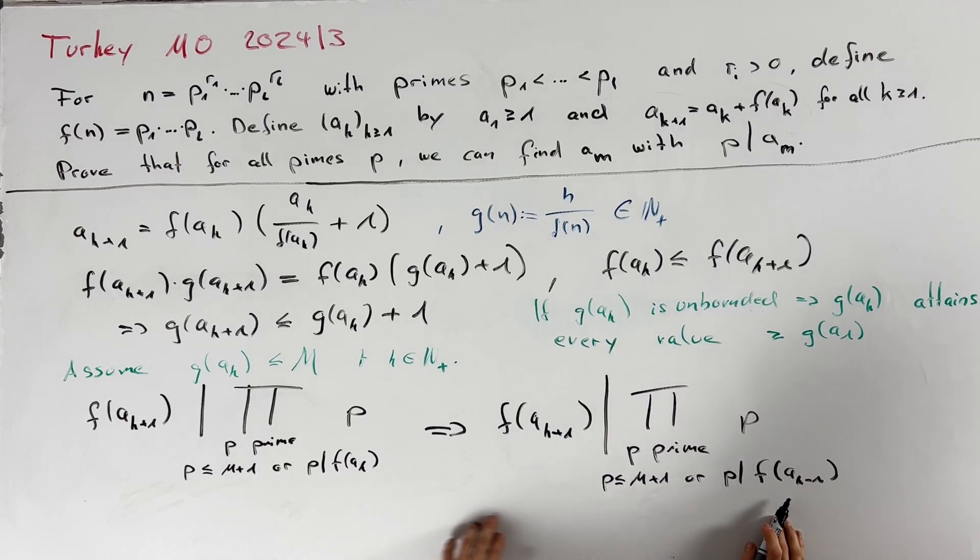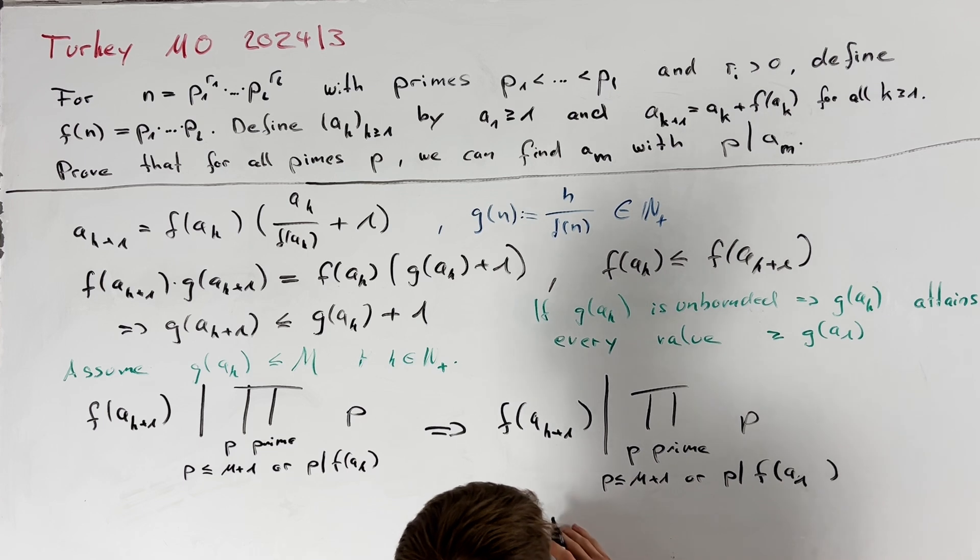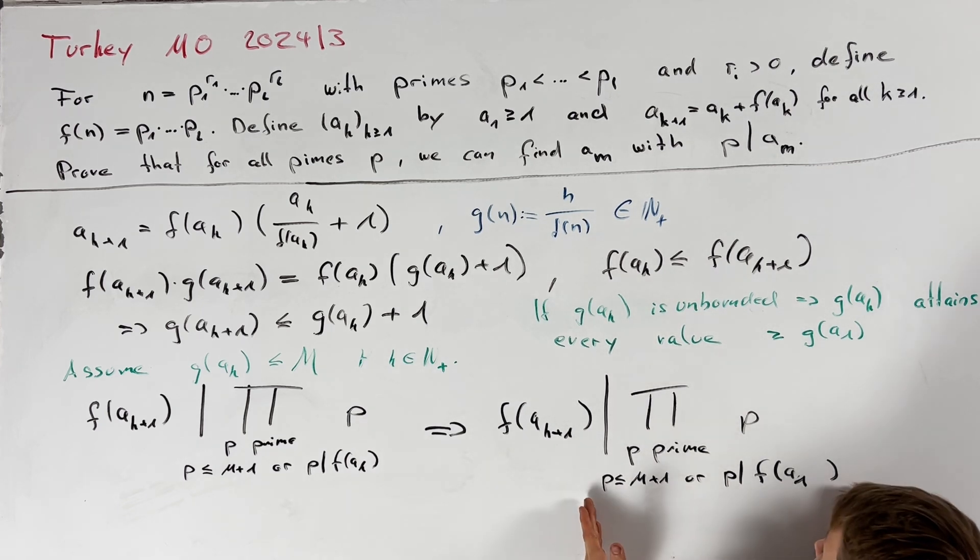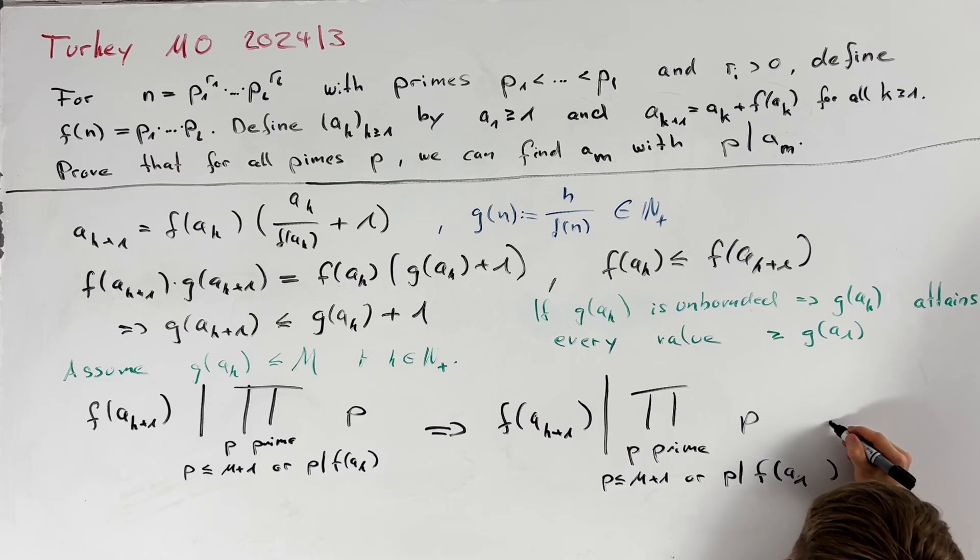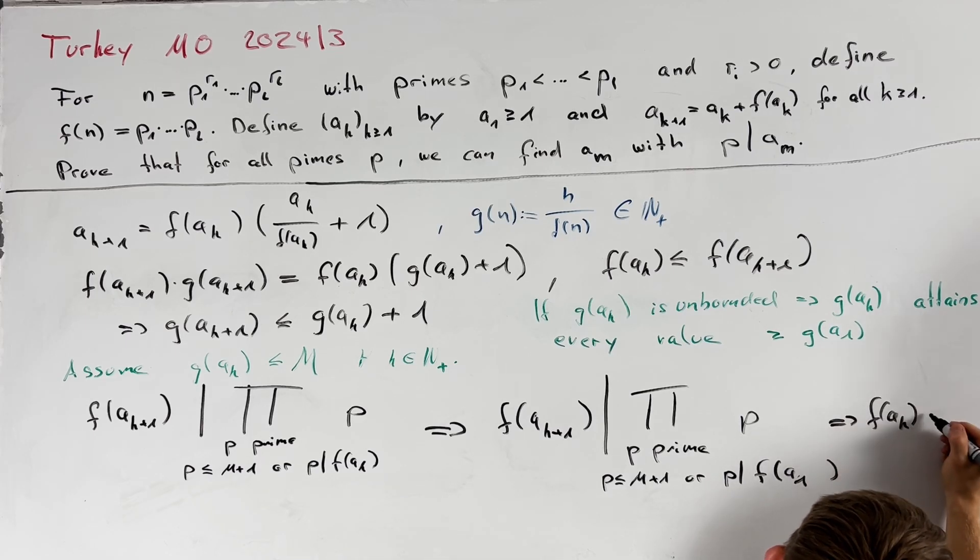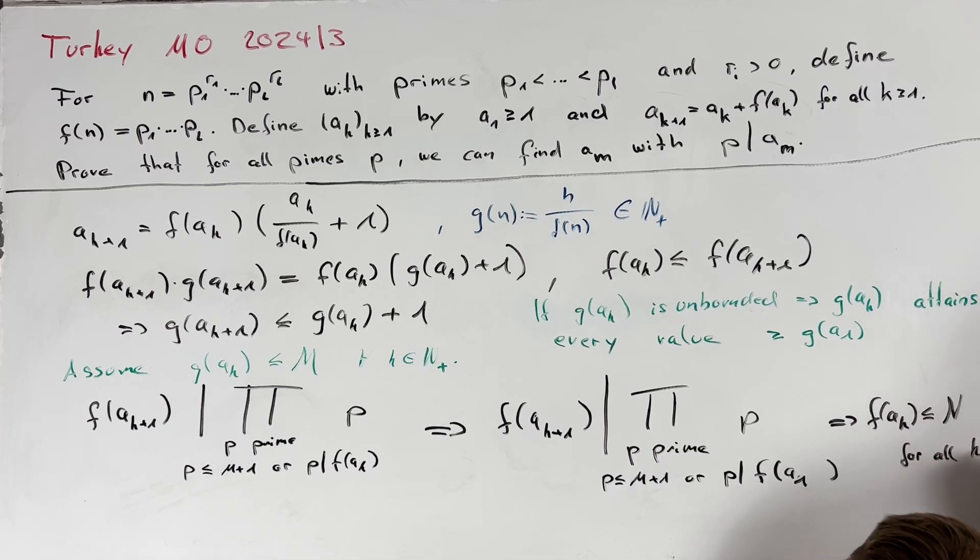By just a 1. This directly implies that f of a_k is bounded by this product here and therefore we can write that f of a_k less than or equal to some constant n for all positive integers k.